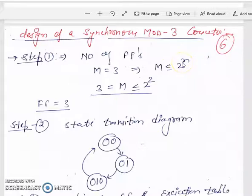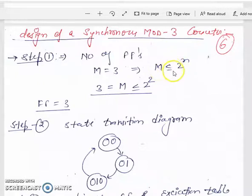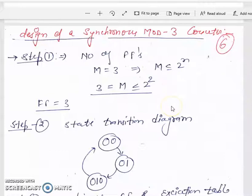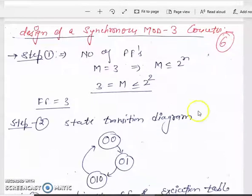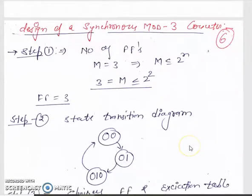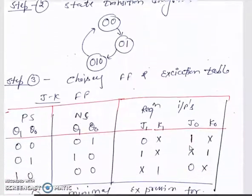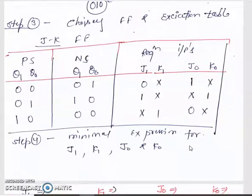We evaluate 2^n: when n=1, 2^1=2 which gives m=2, and 3 ≤ 4 when n=2, so the required number of flip-flops is 2. That is the state diagram. We then write the excitation table choosing the JK flip-flop.